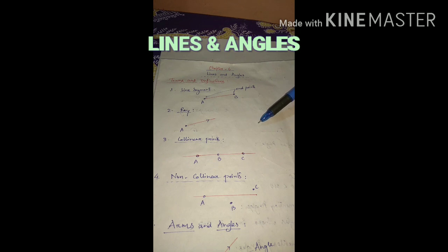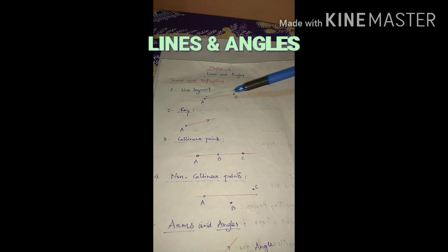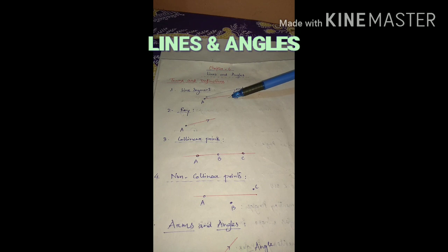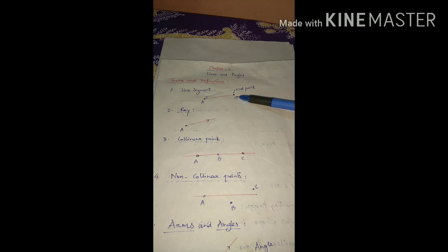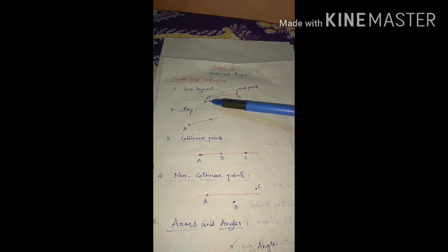First of all, let us revise the terms and definitions you learned in class seven or eight. The first one is line segment. A line segment means we consider a line, but the most important part is that two end points are required. If two end points are there and we consider the portion in between them, that portion is known as a line segment. Points A and B are the end points.